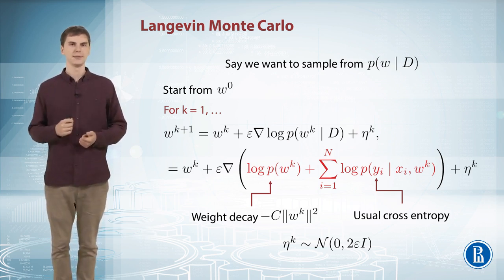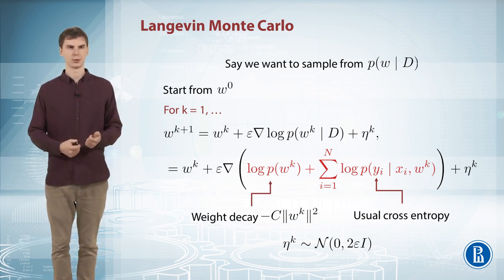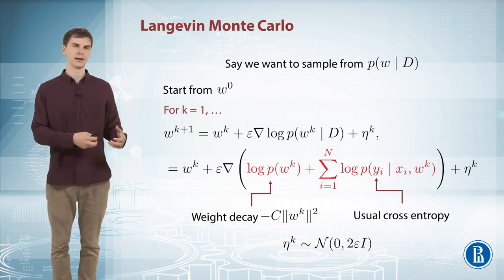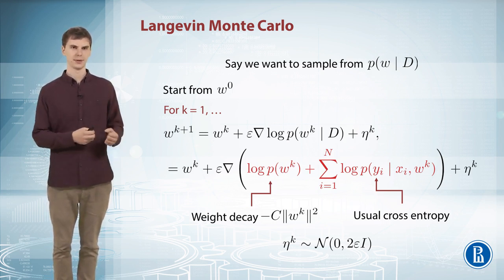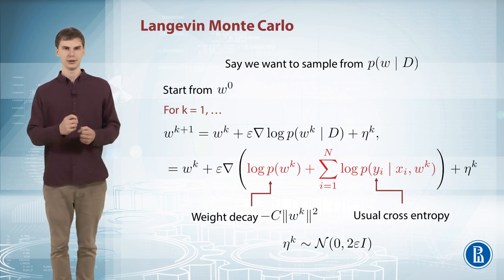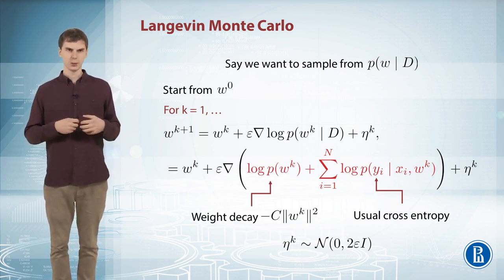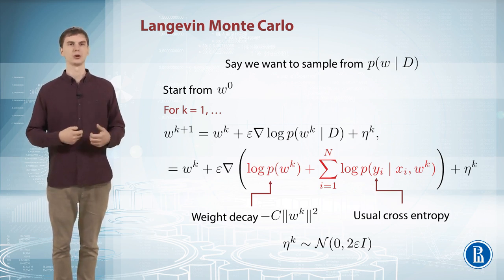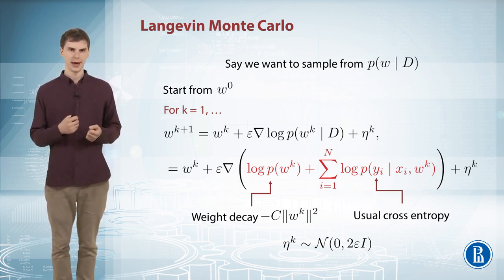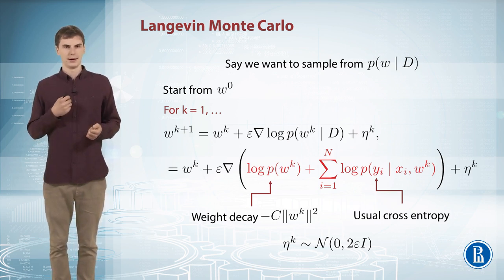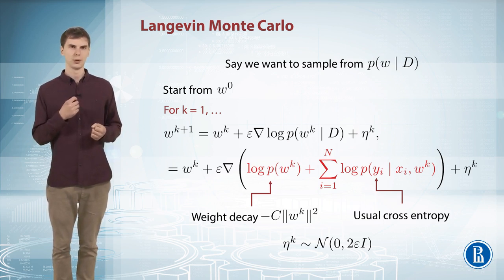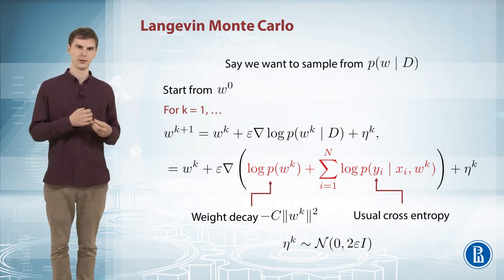So this particular update is actually a gradient descent or ascent with step size epsilon applied to your neural network to find the best possible values for parameters. But on each iteration you add some Gaussian noise with variance being epsilon, so proportional to your learning rate. And if you do that, and if you choose your learning rate to be infinitely small, you can prove that this procedure will eventually generate you a sample from the desired distribution p of w given data.